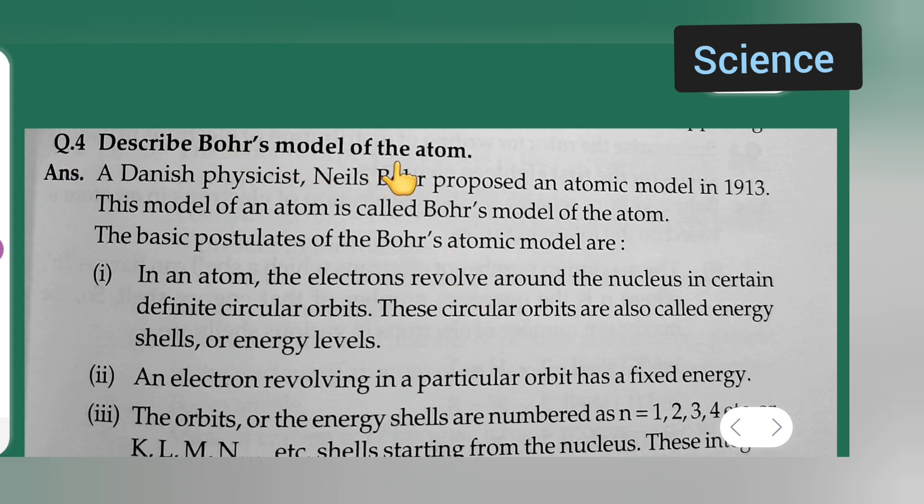Describe Bohr's model of the atom. Answer: A Danish Physicist, Niels Bohr, proposed an atomic model in 1913. This model of an atom is called Bohr's model of the atom. The basic postulates of the Bohr's atomic model are: